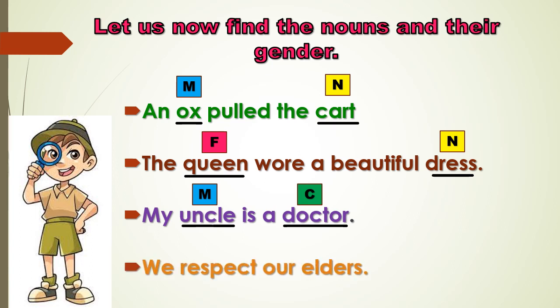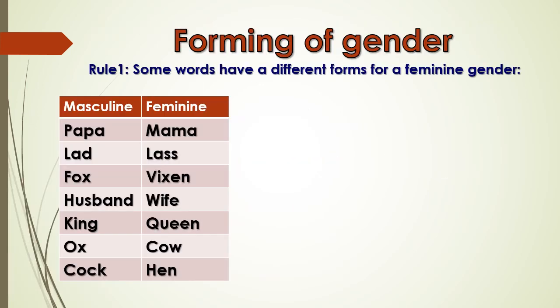The last example: 'We respect our elders.' Here, elder is a noun which comes under the category of common gender. Now we understand how to identify the different noun genders.